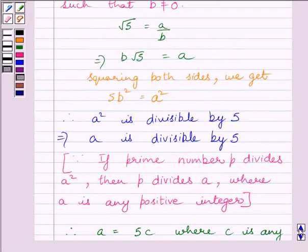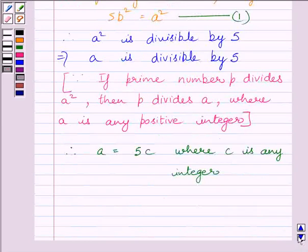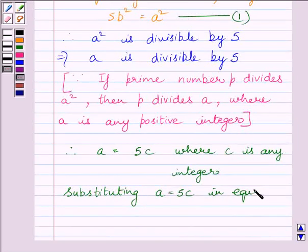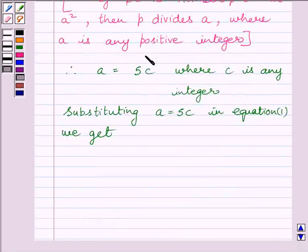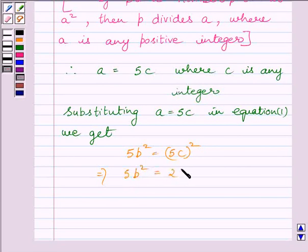Now, let us name the equation obtained above as equation 1, that is 5B square equals A square. Substituting the value of A in equation 1, we get 5B square equals 5C whole square. This implies 5B square equals 25C square. This further implies B square equals 5C square.